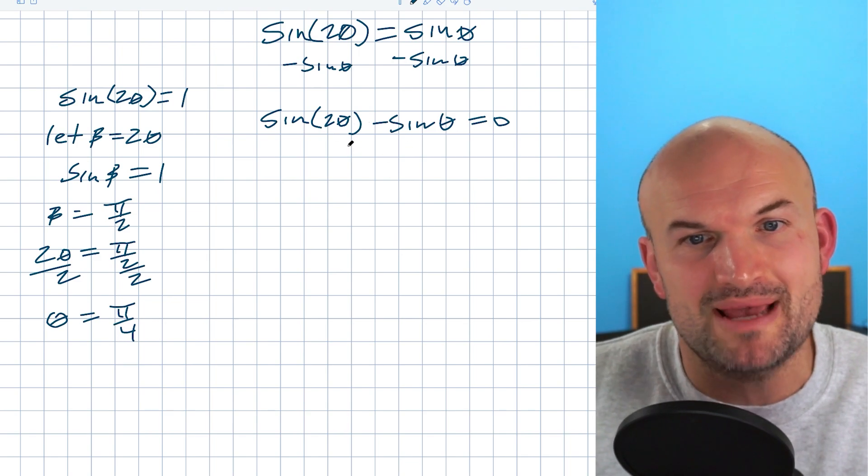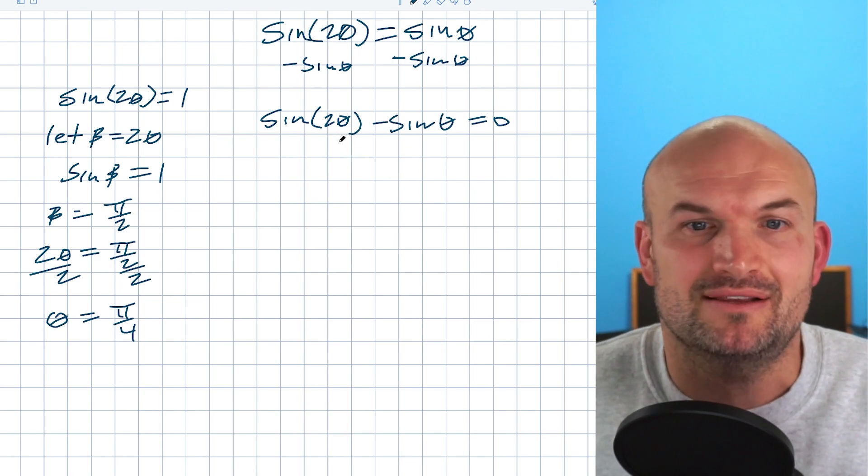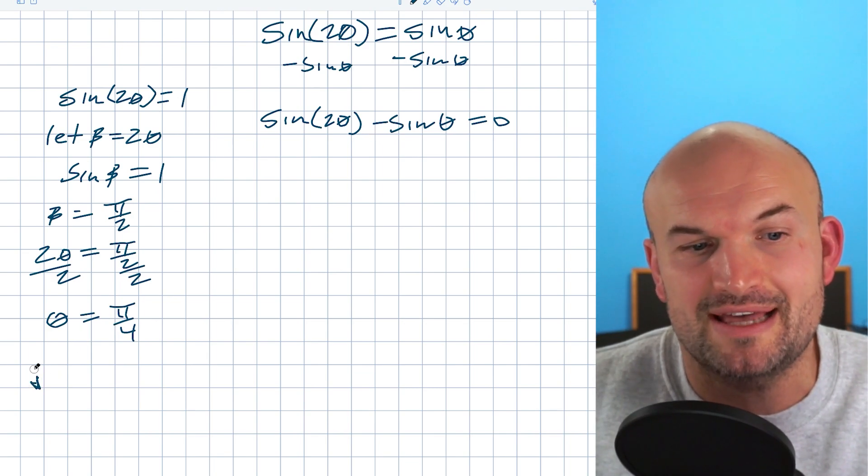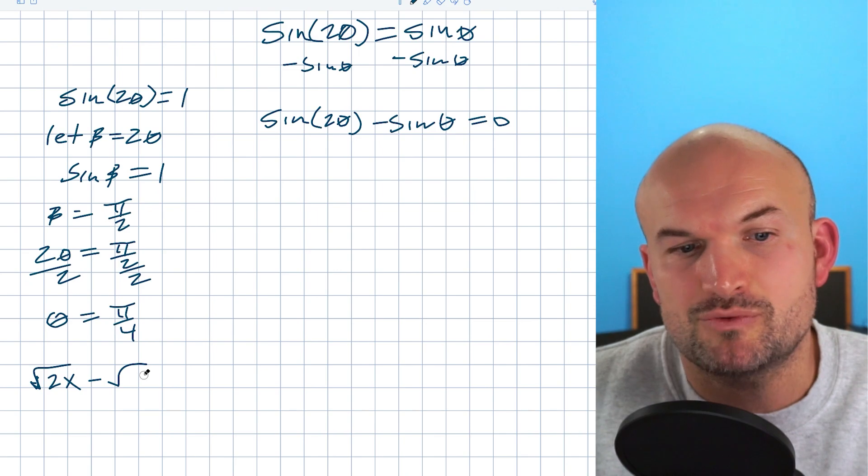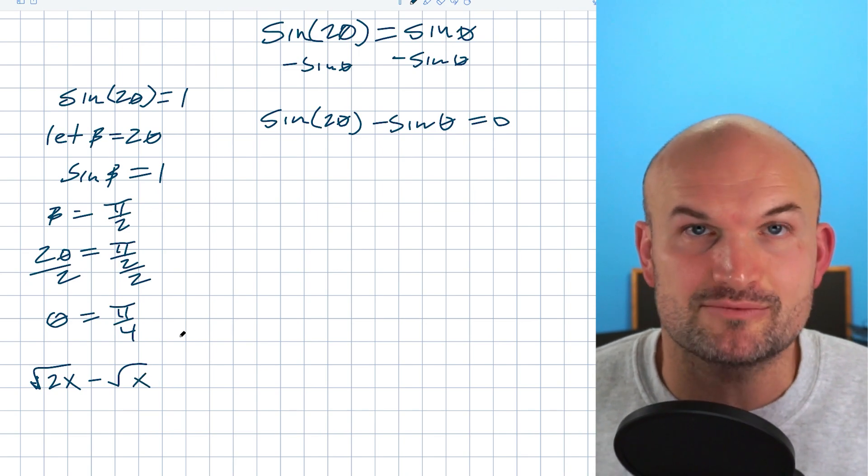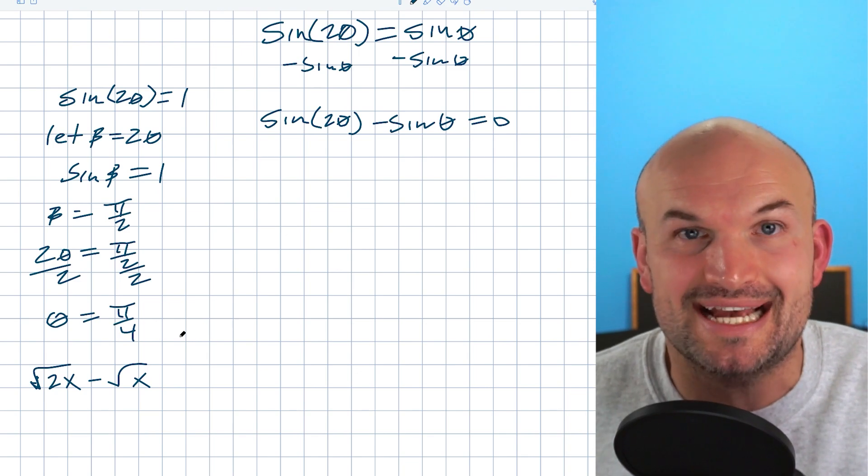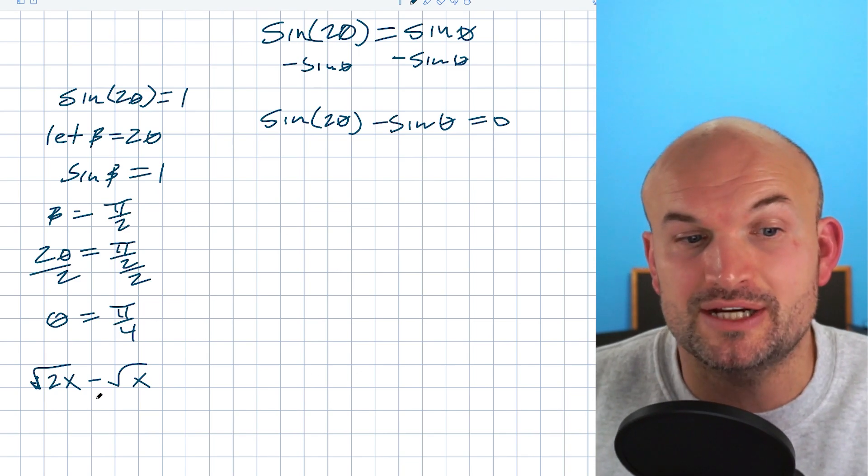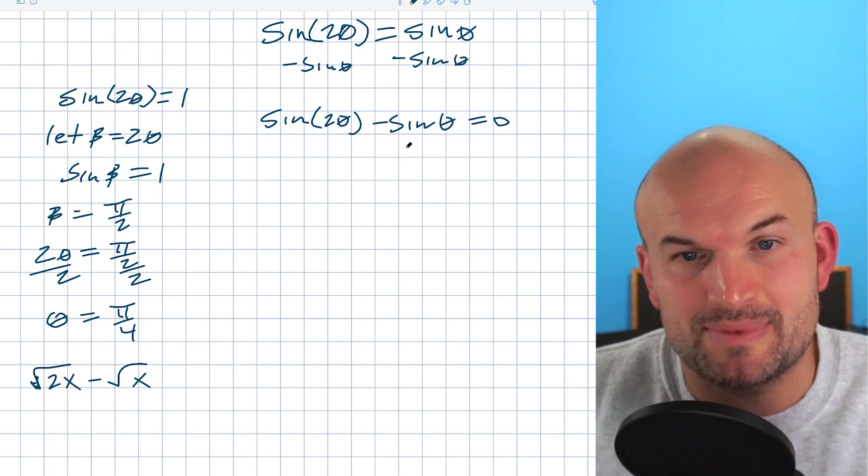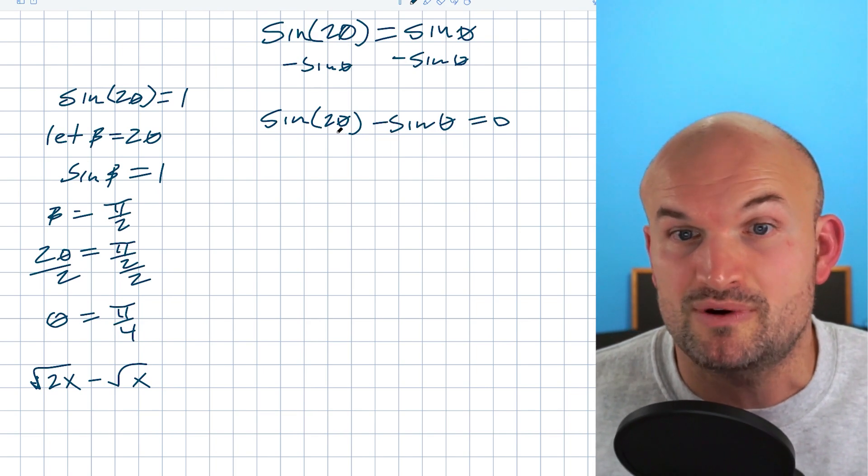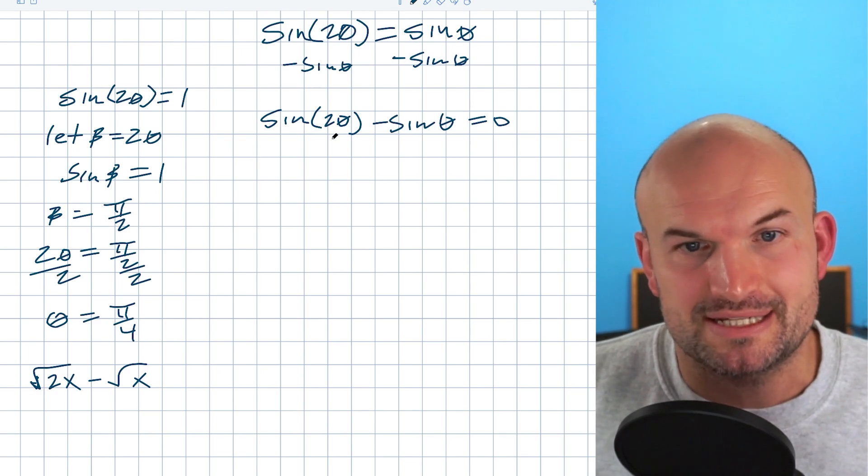Now, another mistake students will make is they'll say, well, why don't we combine these? Like 2θ - θ would be 1θ. But be careful. We can think of this like radicals. If I had √(2x) - √x, remember when you're adding and subtracting radicals, the only way you can do that is when the index and the radicand is exactly the same. There's nothing we can do here to simplify these. That's the exact same case here. We can't isolate sin(2θ) so it's just equal to a value like I did in the previous example. And we can't combine these. So this is where it's important to know I have the double angle identity that I can apply.